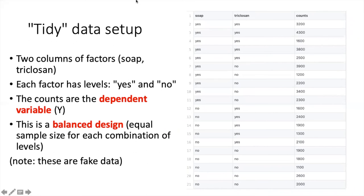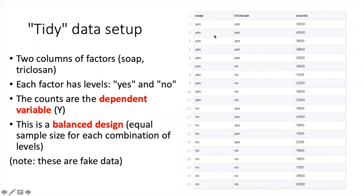Let's take a look at how we would set up the data for an experiment like this with two factors. We have two columns of grouping variables. Each of those columns is a factor in the terminology of R and in experimental design. In the first column, SOAP can have a value of yes or no. In the second column, Triclosan can have a value of yes or no. And we have every permutation of those two.